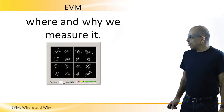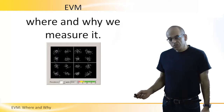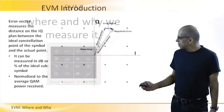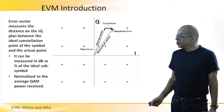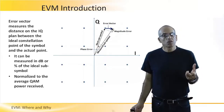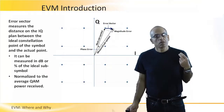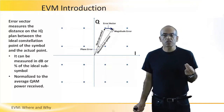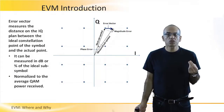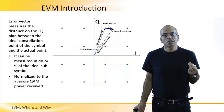Error vector magnitude - where and why we measure it. We introduced a new term here, so it's time to define it. We mentioned the constellation map when we talked about generating QAM symbols. Each point on the constellation map represents an amplitude and phase that contains the information of that symbol, and we try to have this amplitude and phase as accurate as possible.